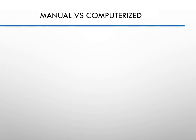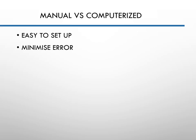Let's look at the comparison between the manual accounting system and the computerized accounting information system. The computerized AIS is easier to set up because the ledgers and journals are already embedded in the system — you only need to create the chart of accounts. The computerized accounting system will also minimize errors; for example, when preparing ledgers we often forget to record the other side of an account.